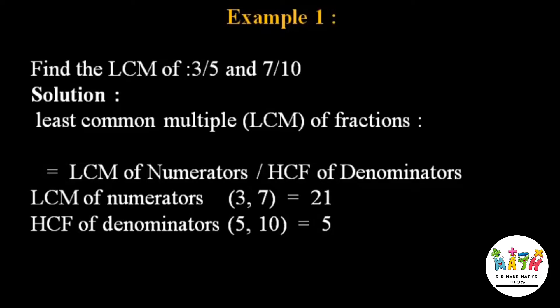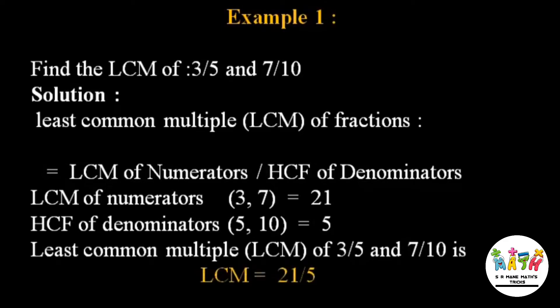So the least common multiple of 3/5 and 7/10 is 21 by 5. We put the LCM of the numerators (3 and 7 = 21) over the GCF of the denominators (5 and 10 = 5), giving us LCM equal to 21 divided by 5.